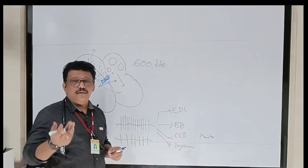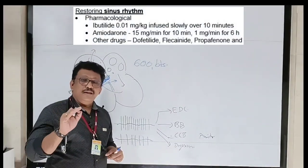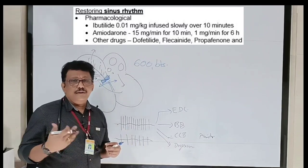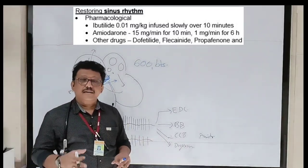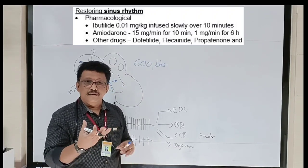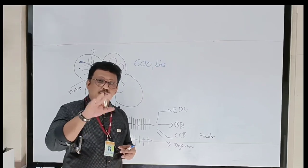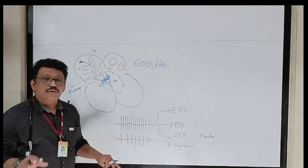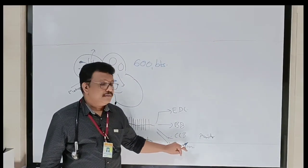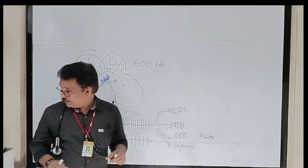That irregularity should be treated in the cath lab with different drugs or electrophysiological procedures. In the emergency room you have to only control the rate rather than concentrating on rhythm. We are controlling rate because rapid heart rate reduces cardiac pumping — the diastolic phase is shortened, blood accumulated in the ventricle is reduced, reducing cardiac pumping and causing hemodynamic abnormalities. Our aim is to control rate with beta blockers, calcium channel blockers, or digoxin.